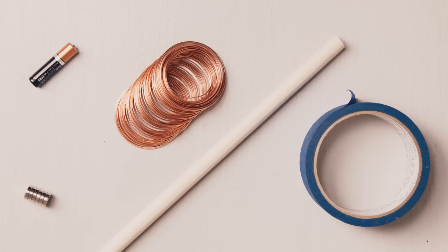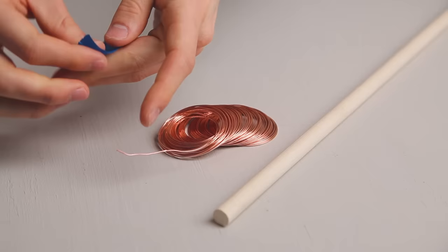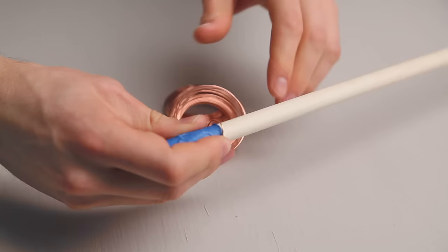For this project you'll need a spool of copper wire, preferably around 20 gauge, a AAA battery, six neodymium magnets that are just wider than your battery, a dowel that is just wider than your neodymium magnets, and some tape.